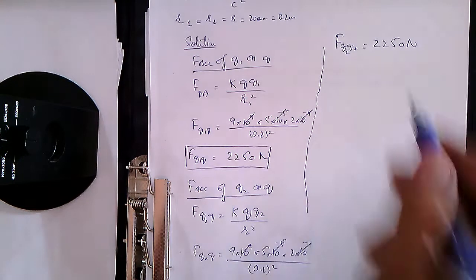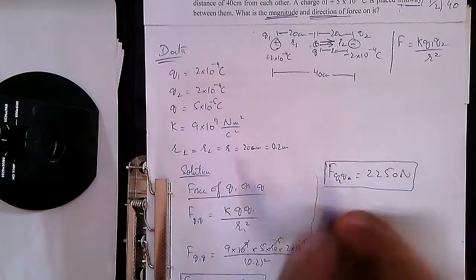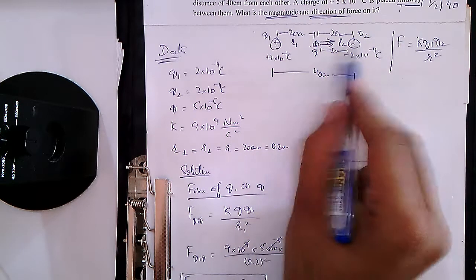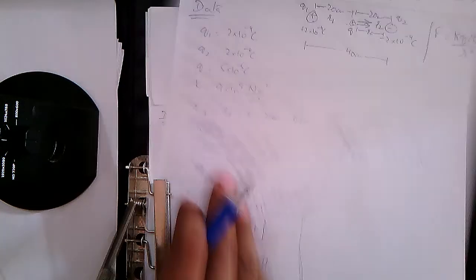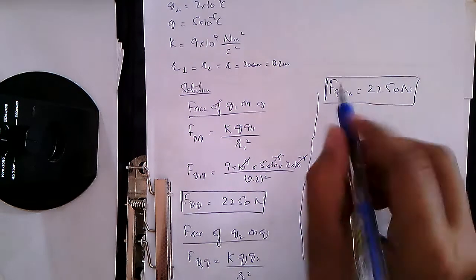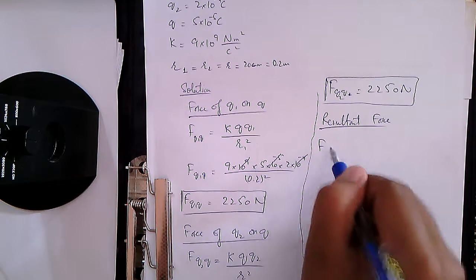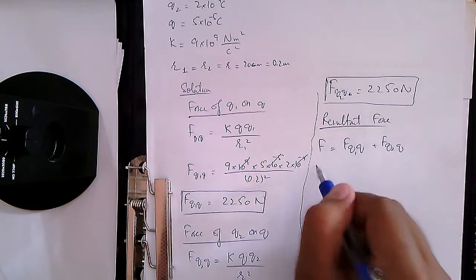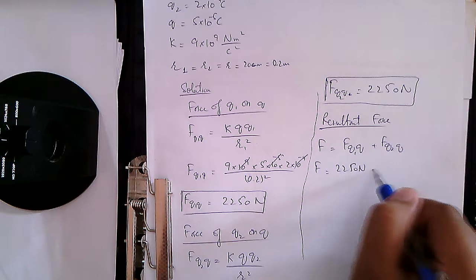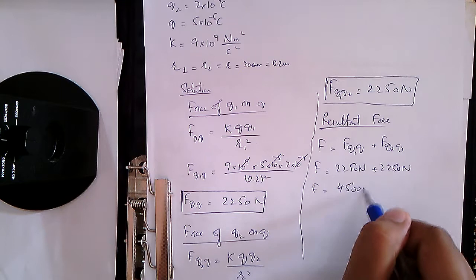Now we need to find the combined force. Looking at the diagram: the positive charge pushes Q in one direction, and the negative charge pulls Q in the same direction. So the resultant force F = F(Q1,Q) + F(Q2,Q) = 2250 + 2250 = 4500 Newtons.